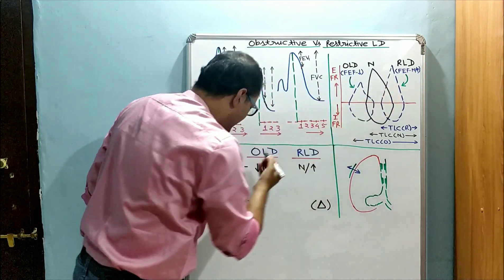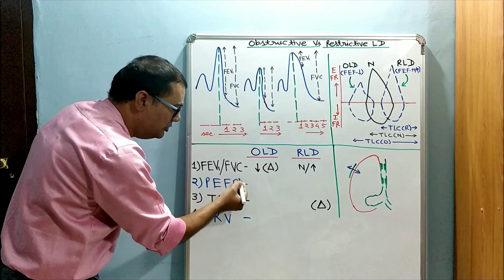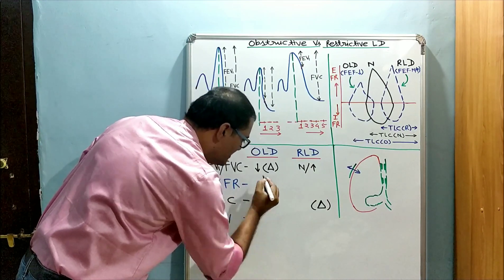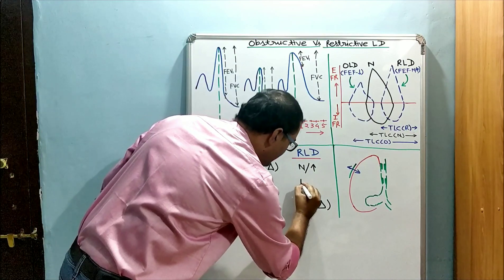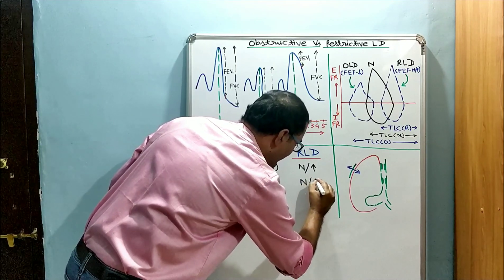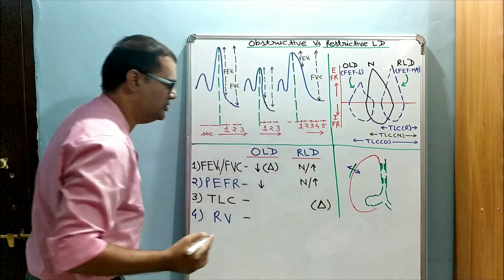So all the flow rates, including peak expiratory flow rate, are reduced in obstructive, while again normal or increased in restrictive lung disease.